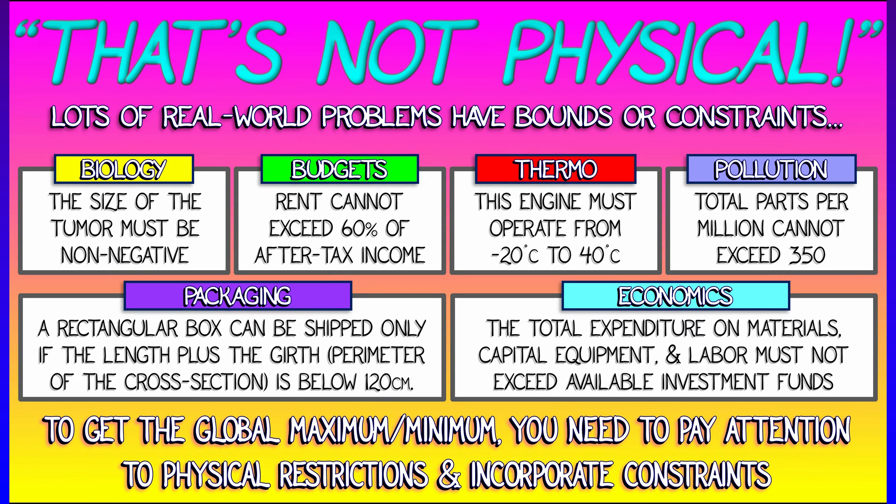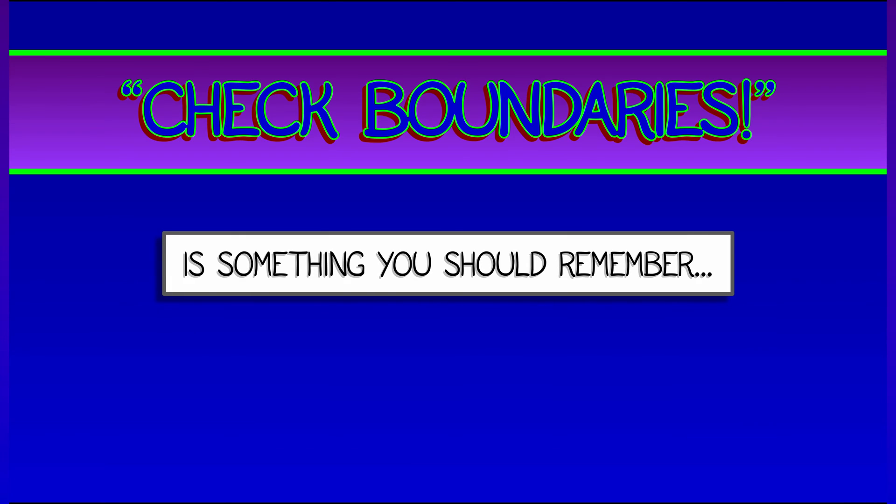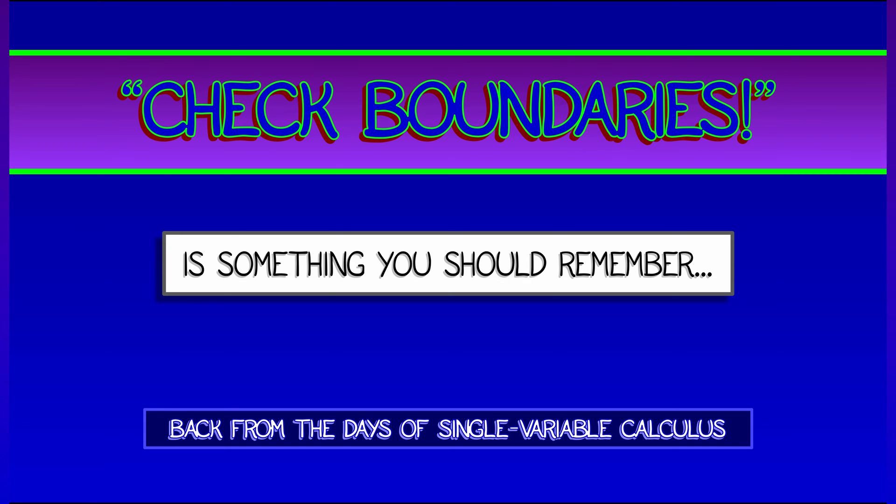What you need to remember is that to get a global maximum or minimum in a problem, you need to pay attention to all of the local critical points that you find, and you have to check the boundaries. You probably remember your single-variable calculus teacher yelling at you about this, how you've got to check.